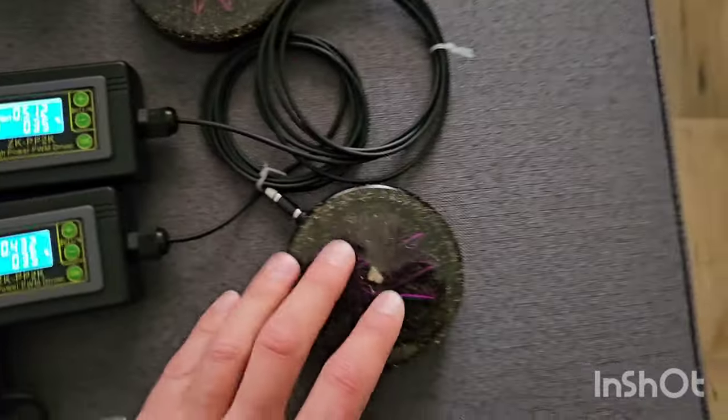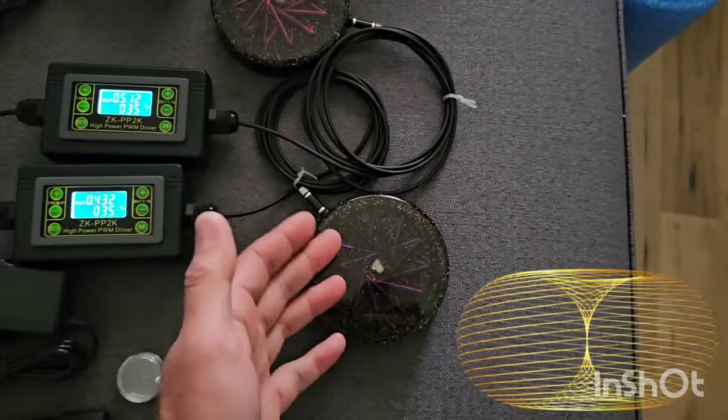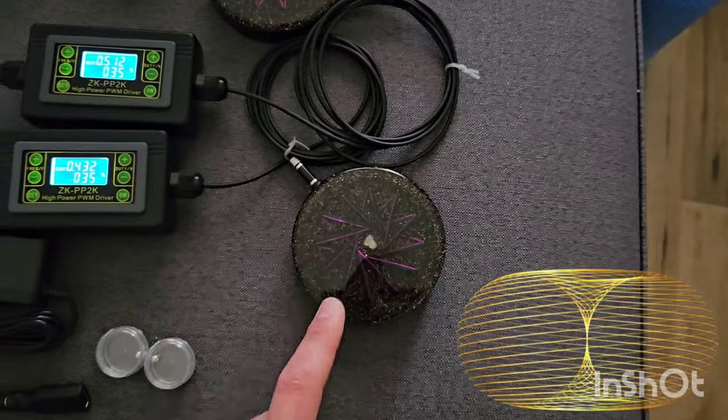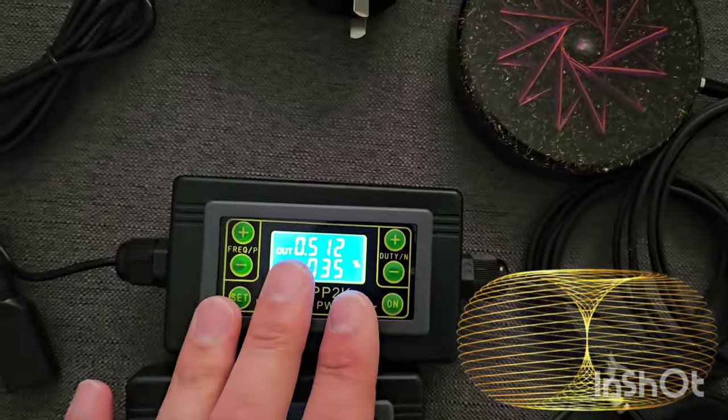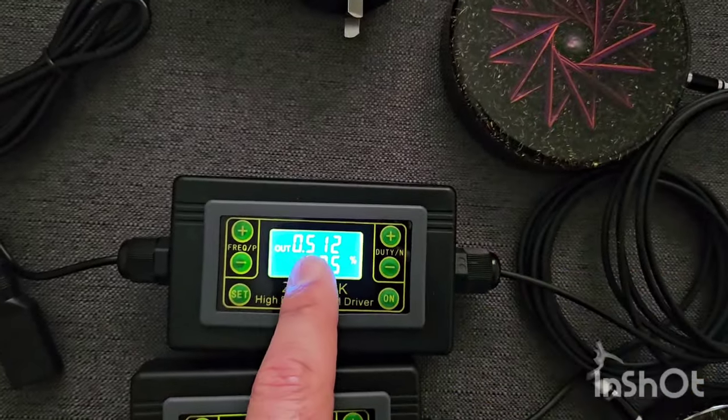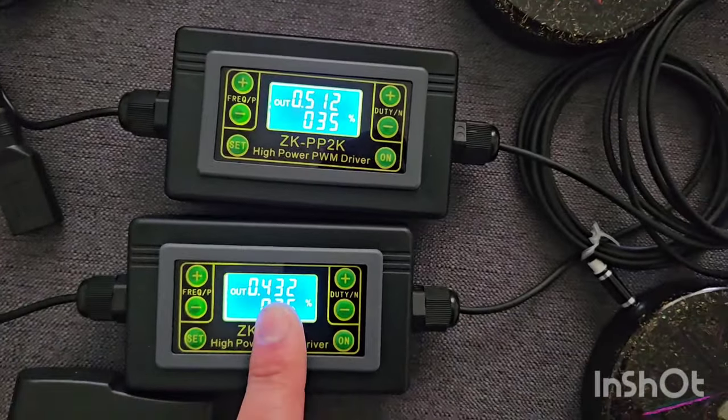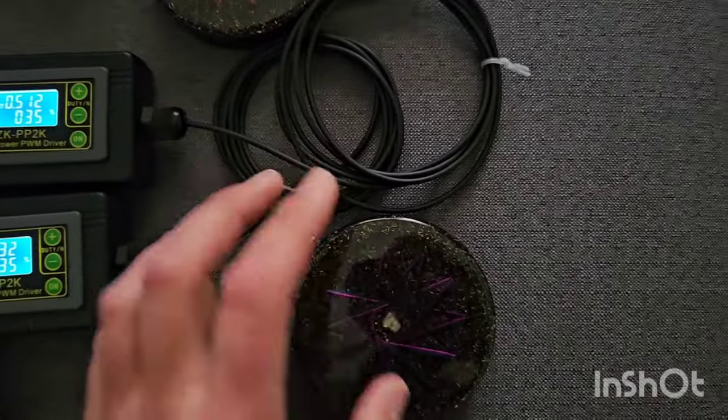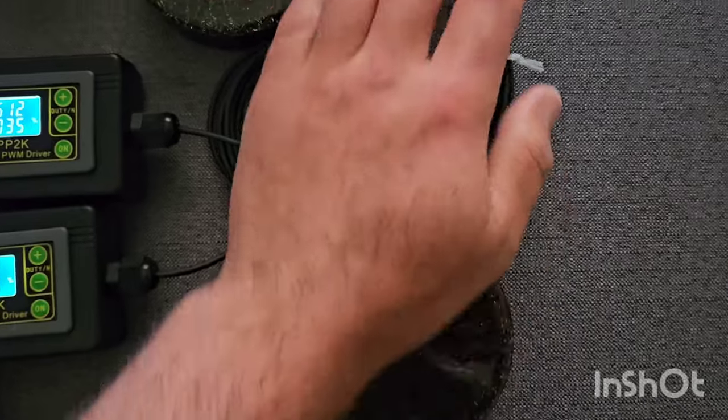So frequencies are coming through, so now it's creating a magnetic field, a torus field of energy of this frequency. So one of them, they're both plugged in, one of them is 512, good for the heart, and one of them is 432, nature's harmonic tone, harmonic frequency.